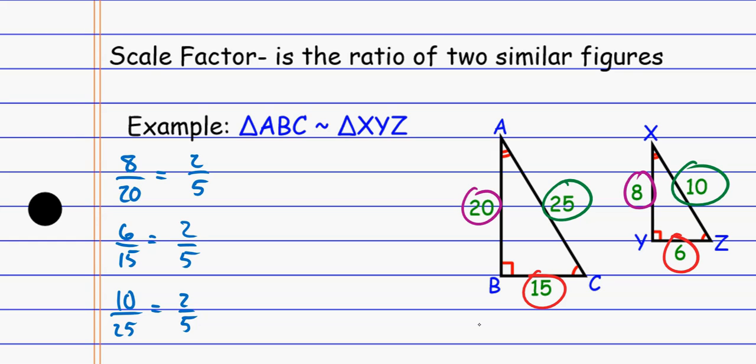That special ratio that's true for all of them, that's my scale factor. And so when we talk about the scale factor of this thing, the scale factor of the small triangle to the big triangle is 2 to 5 written this way.